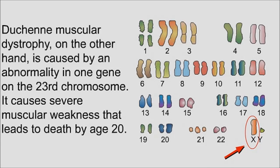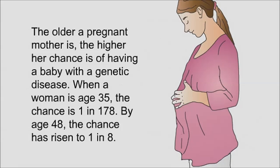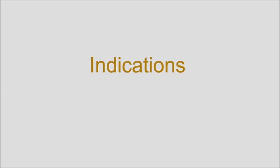The older a pregnant mother is, the higher her chances of having a baby with a genetic disease. When a woman is age 35, the chance is 1 in 178. By age 48, the chance has risen to 1 in 8.